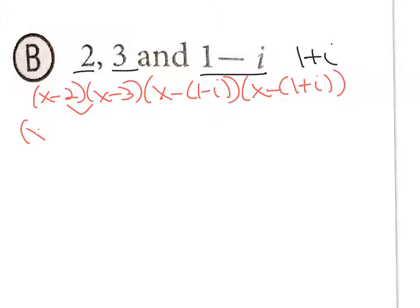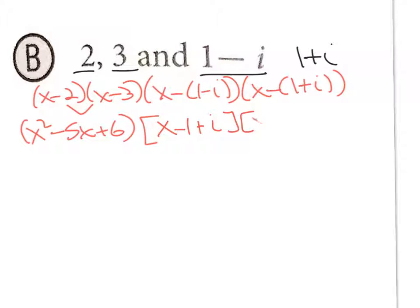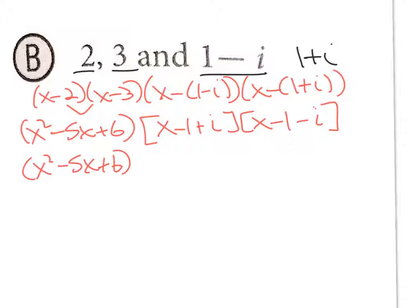First, FOIL (x − 2)(x − 3) to get x² − 5x + 6. Then handle the complex conjugate pair. Distributing the minus signs: (x − 1 + i)(x − 1 − i). These are conjugates, so do first × first and last × last: (x − 1)² − i².